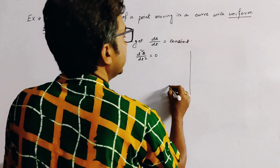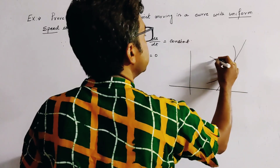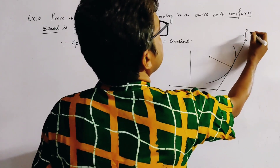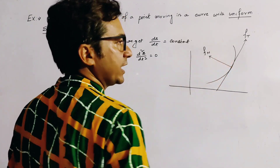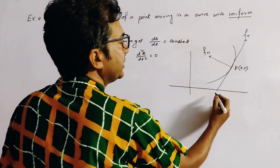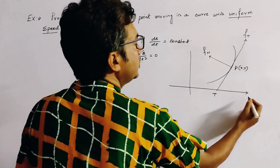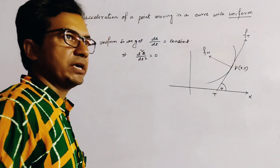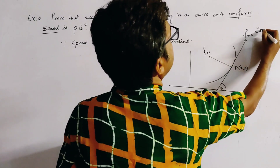Now, in the diagram, this is the tangential direction and this is the normal direction. At any point P(x, y) on the curve, the tangent at P cuts the x-axis, and the angle between the tangent and the x-axis is taken to be ψ.